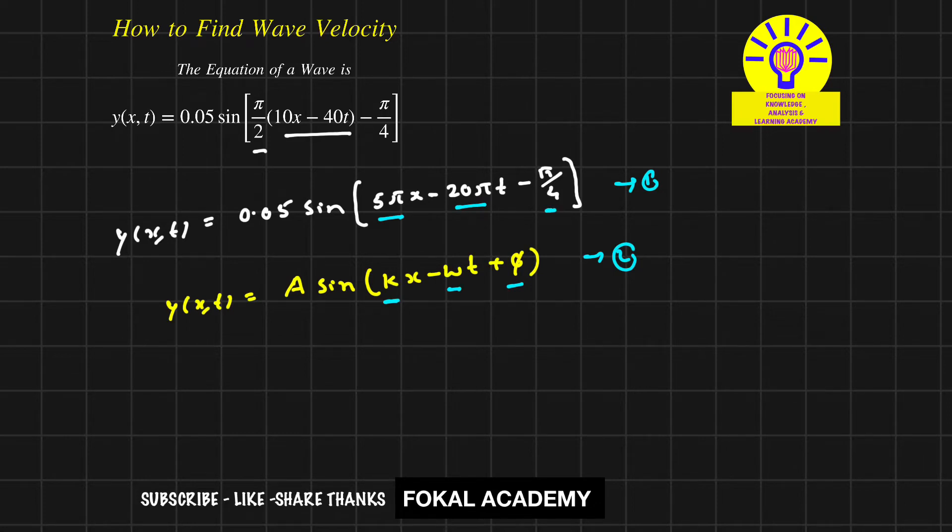According to the problem, we want wave velocity. Wave velocity is the product of frequency and wavelength. So first, we'll find the frequency and wavelength from this equation, then we get wave velocity.